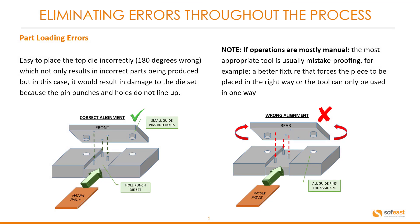Let's look at part loading errors. Here we see a simple punch die set. It's easy to place the top die incorrectly — in other words, 180 degrees wrong — which not only results in incorrect parts being produced, but in this case it would result in damage to the die set because the pin punches and holes do not line up. Note: if operations are mostly manual, the most appropriate tool is usually mistake proofing.